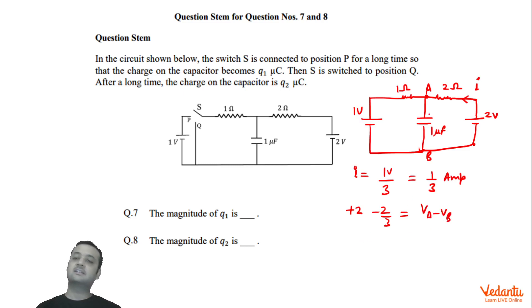So we can say that the charge on the capacitor Q1 will be 4 by 3 into 1. So this becomes 1.33 microfarad. 1.33 microfarad. Micro coulombs not farad. My bad. Micro coulombs.